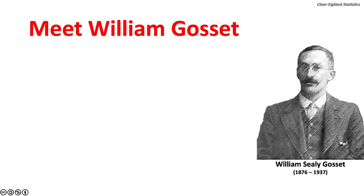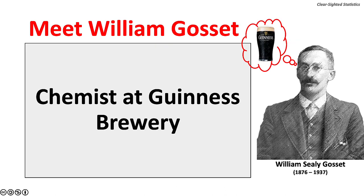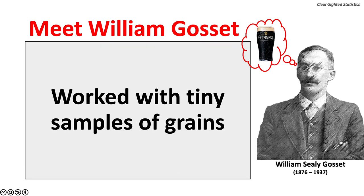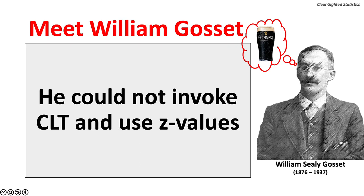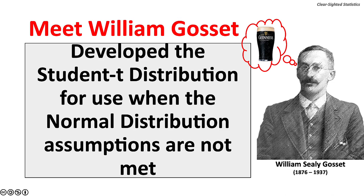Meet William Gossett, a University of Oxford chemist, who created the Student t-distribution during the first decade of the 20th century. Gossett worked as a chemist and master brewer at the Guinness Brewery in Dublin, Ireland, where he worked with tiny samples of grains. He could not always invoke the central limit theorem and use Z values, so he developed the Student t-distribution for use when normal distribution assumptions are not met. The brewery considered Gossett's innovation a trade secret, but agreed to allow him to publish it if it were not associated with Gossett, Guinness, or beer — which is why this distribution was named 'Student t'.